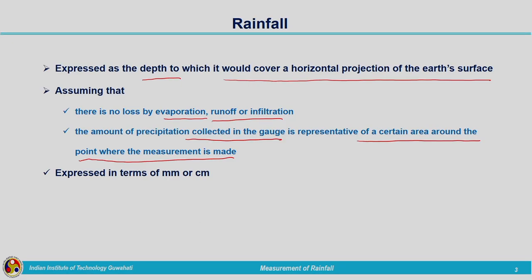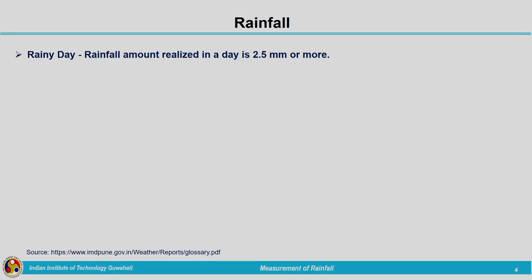Rainfall is expressed in terms of millimeters or centimeters. Sometimes we say we are experiencing heavy rain or very heavy rain. We need to understand the classification for heavy rain or light rain. According to IMD, we will call a day a rainy day if the rainfall amount is 2.5 millimeters or more. If we are getting rainfall of 2.5 millimeters or above in a particular day, we consider it a rainy day.